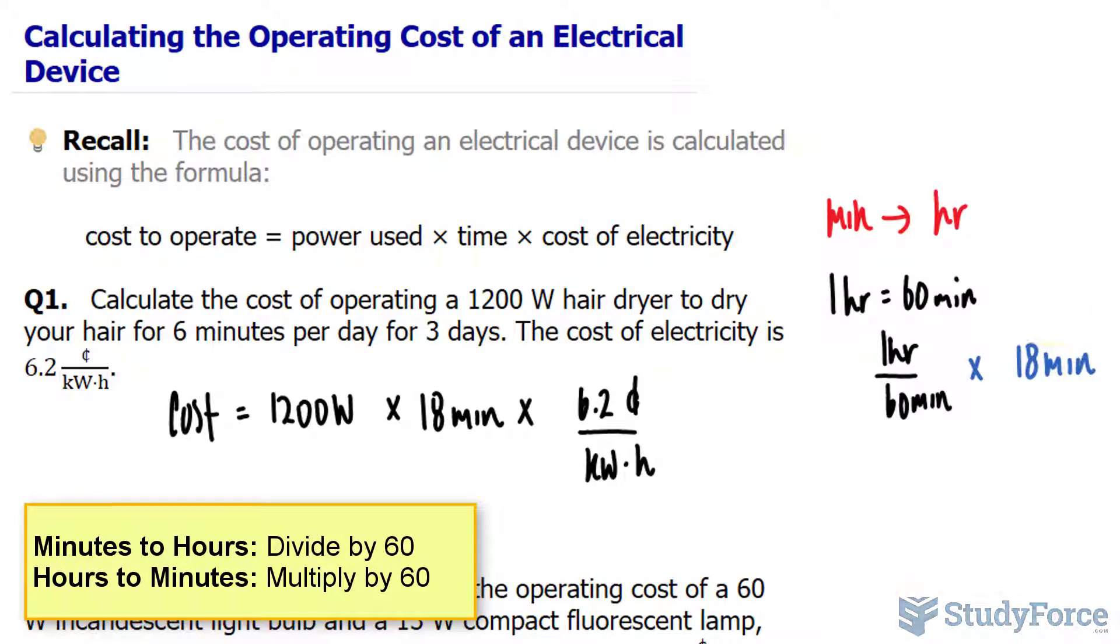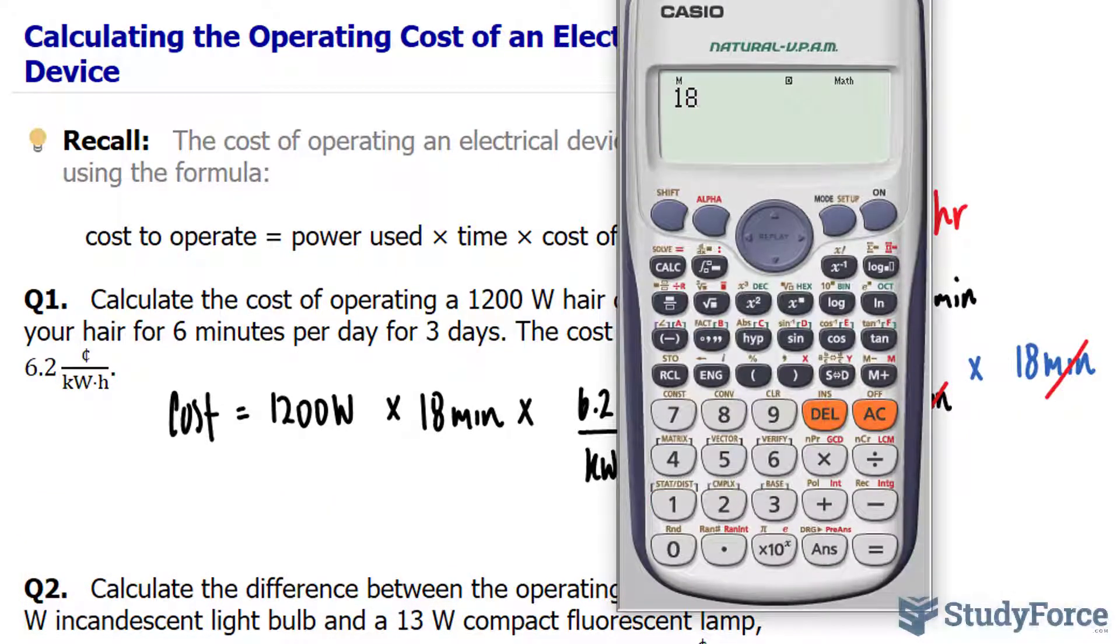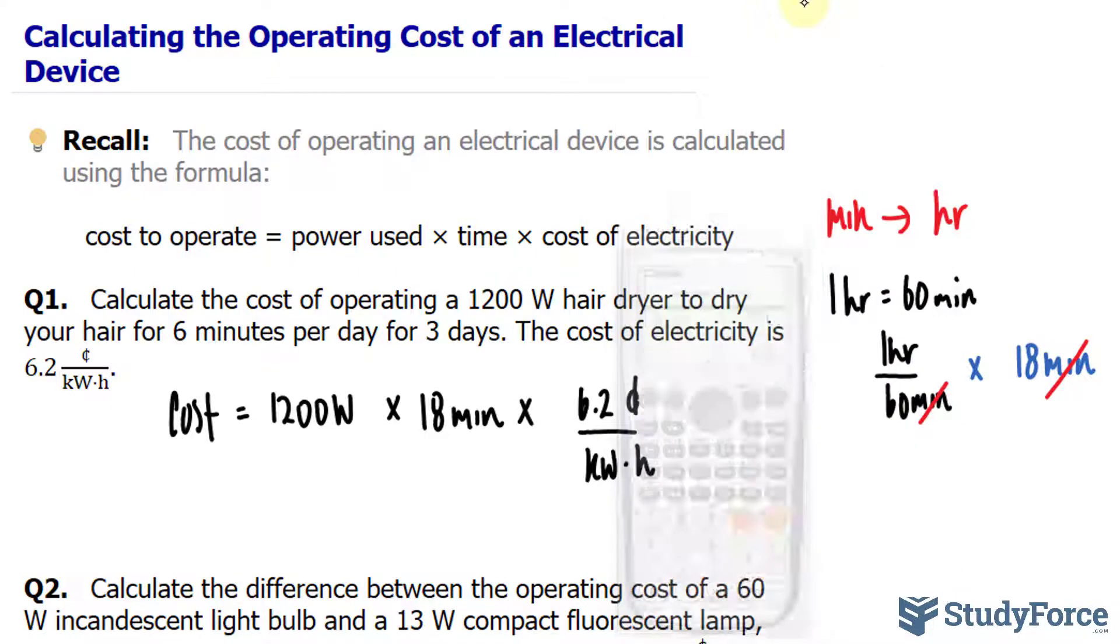Notice that the units here will cancel out, and dividing 18 by 60 gives us the equivalent in hours. So 18 divided by 60 means that there are 0.3 hours in 18 minutes. I'll go ahead and change that to 0.3 hours instead.